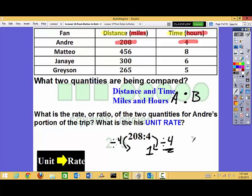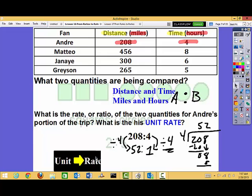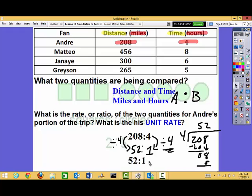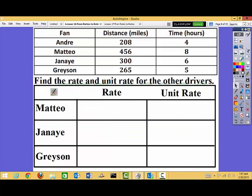5 times 4 goes into 20. Subtract and I get 0. Bring down that 8. Goes in 2 times with no remainder. So this is going to be 52 to 1, or 52 miles per hour. Let's check our work. So notice that ours match up. So his unit rate is 52 miles per hour. Okay, so now we need to find the unit rate for our other drivers. So let's look here. I'm just going to fill my chart in.